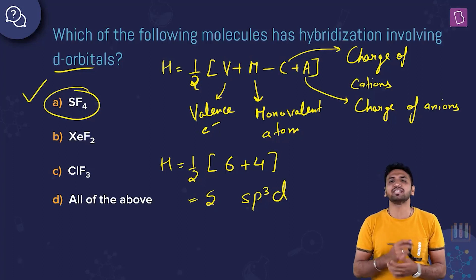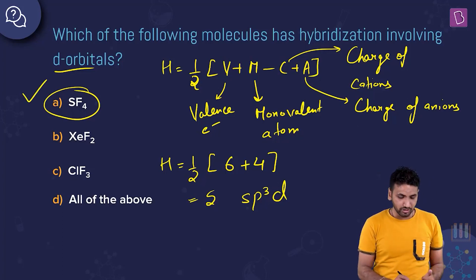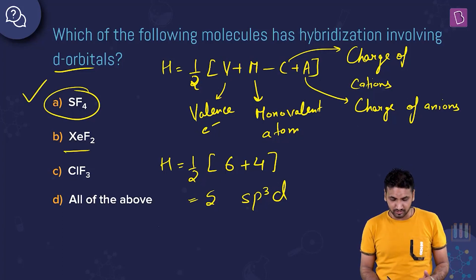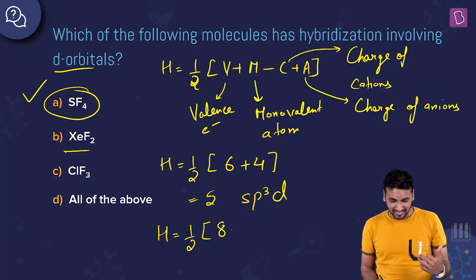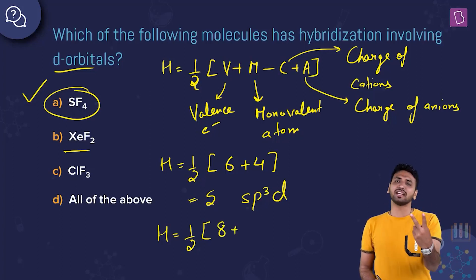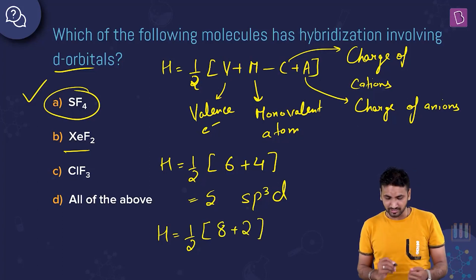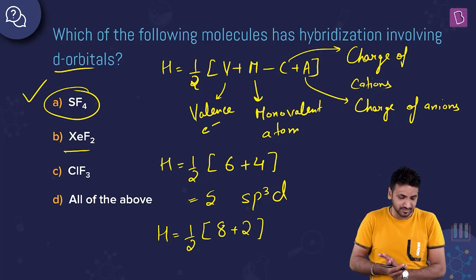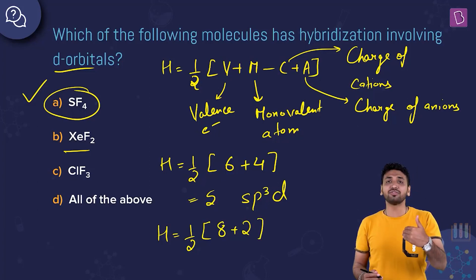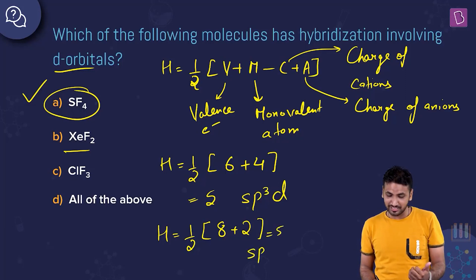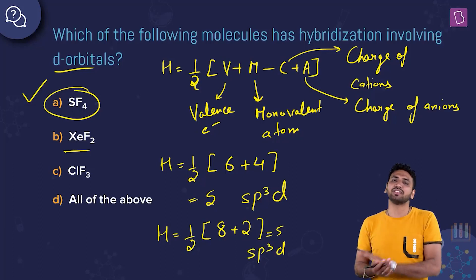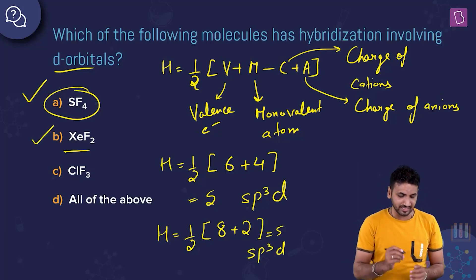Moving on to XeF2. Xenon is a noble gas with eight valence electrons. We have two fluorine atoms, and the molecule is neutral. So it's one by two of (8 + 2) = 10 by 2 = 5 again. This is again sp3d hybridization, so d orbitals are involved.